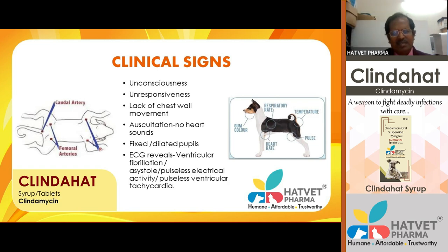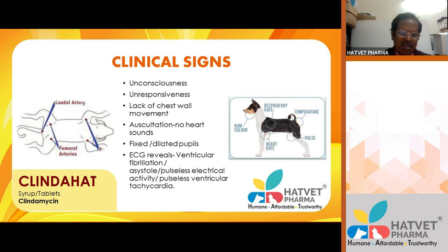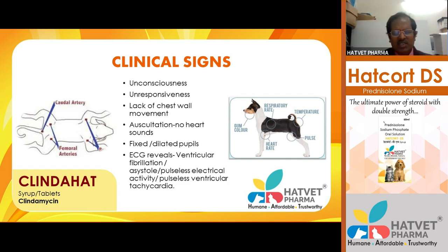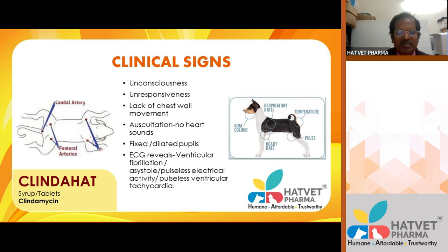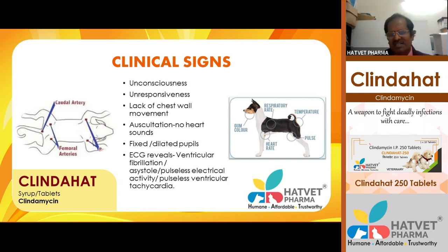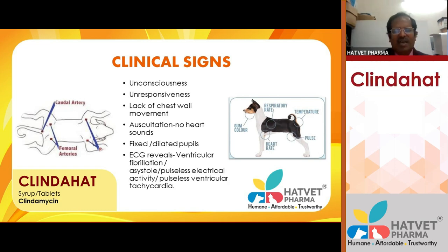Most importantly, animals with multi-organ involvement become unconscious and are unresponsive. On auscultation, you will hear no heart sounds. The animal may have fixed or dilated pupils. On ECG, you will see ventricular fibrillation patterns, asystole, pulseless electrical activity, and pulseless ventricular tachycardia. These are some of the important clinical signs observed in cardiopulmonary arrest.